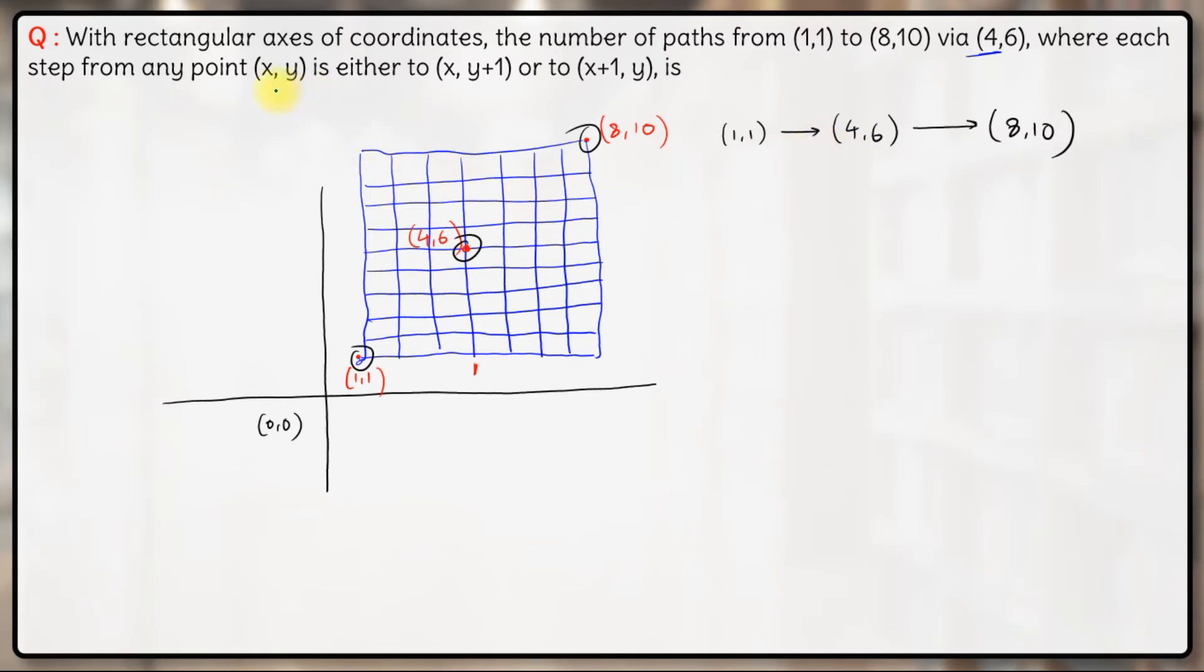The person can go from (x,y) to either (x, y+1), that means the person can either go only upwards, or to (x+1, y), that means he can go only one step right. So either one step right or one step up. These are the only two possible movements for the person. From (1,1), the next move could be (1,2) or the next move could be (2,1). These are the only two moves that we have. So (1,2) is basically moving upwards one step and (2,1) is moving rightwards one step.